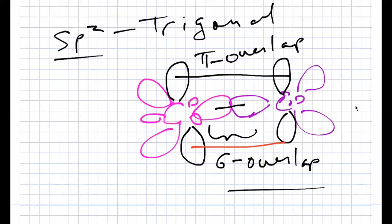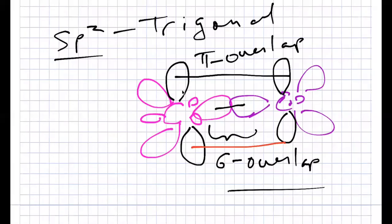Any questions about where the hybrids come from? A hybrid orbital results from adding atomic orbitals together. For carbon, you add S and P orbitals to give SP hybrids. You get sigma bonds from hybrid orbital overlap, and the hybrids themselves come from adding S and P atomic orbitals together.